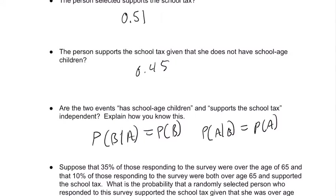If the conditional probability equals the probability itself, in either order, that is what independence looks like. If the conditional equals the probability itself in either order, then the events are independent.